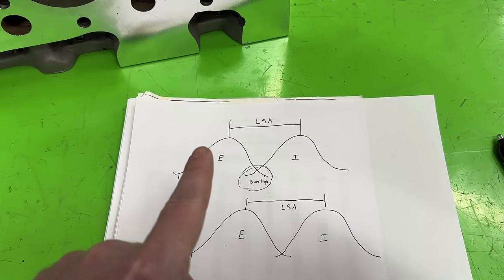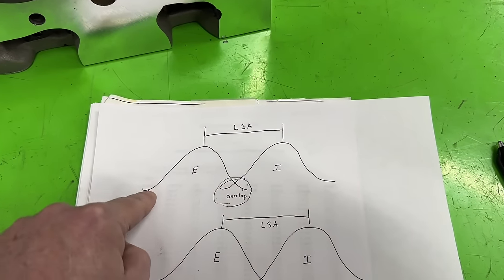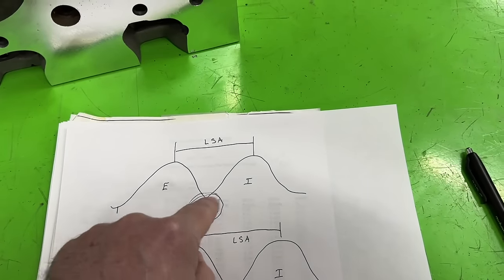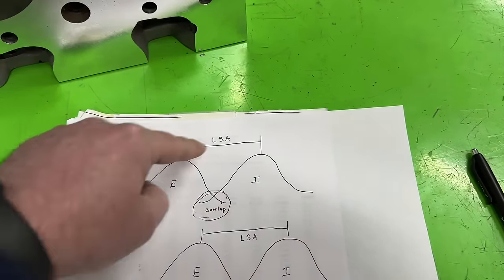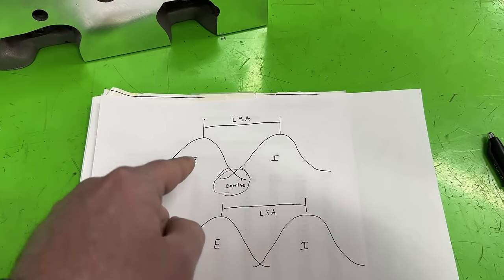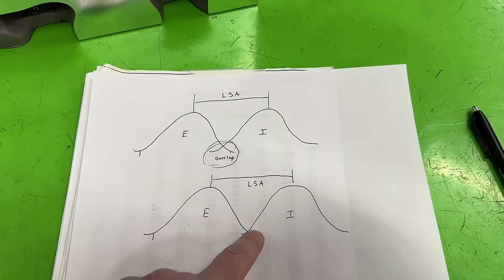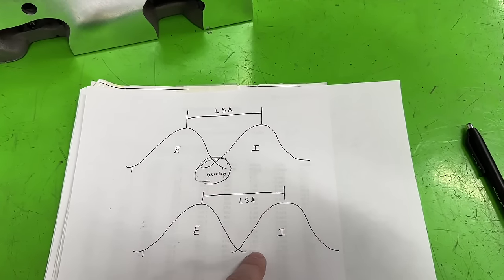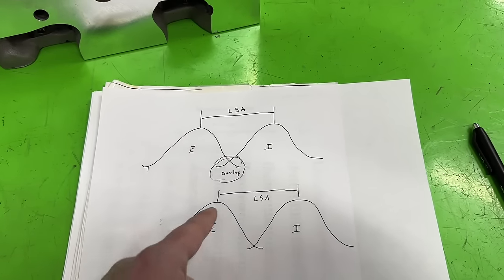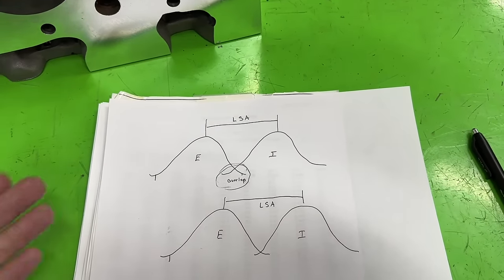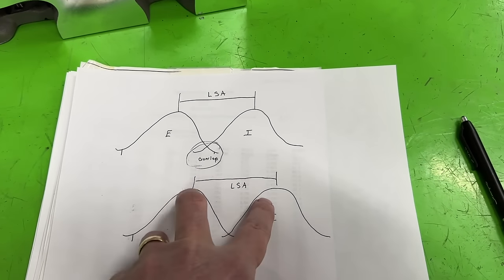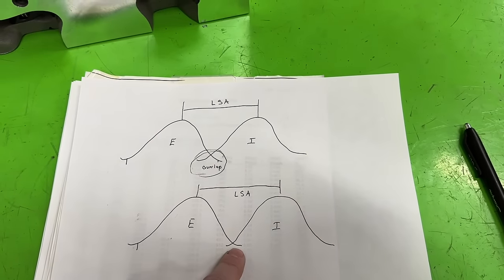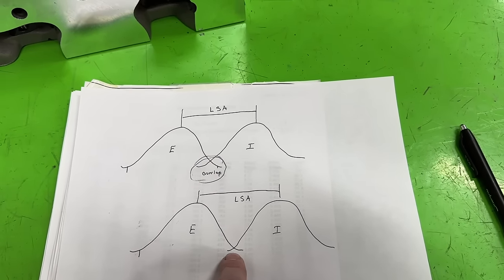That's not the only way to reduce overlap. Each of the four camshaft events — exhaust open, exhaust close, intake open, and intake close — creates everything. You could reduce exhaust duration, reduce intake duration, or move events to different points, which changes the LSA. But the easy way is to just spread the lobes apart, or you can reduce intake and exhaust duration, which also reduces overlap.